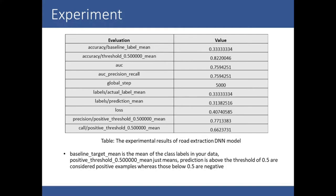The baseline target mean is about 33%. The actual label mean is 0.333334, which represents the class distribution in the data. In this example, the label 0 belongs to class 1 and the remaining examples belong to class 0. The positive threshold means that predictions above 0.5 are considered a positive example.